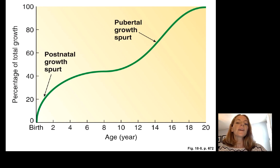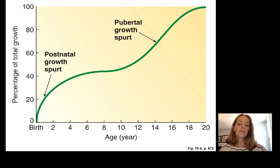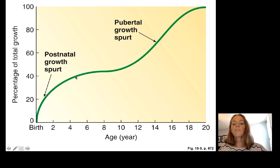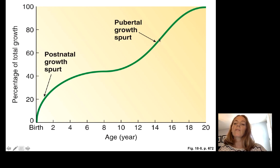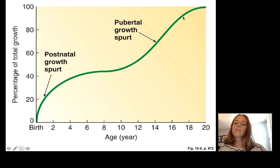These are the times in life when we have major growth spurts. There is a postnatal growth spurt right after birth, from birth to approximately 2 to 4 years. Then things level off between 4 and 10 to 12, though this varies by individual. Then we get another peak in growth — the puberty-related growth spurt around age 12 to 18 — after which things level off again.